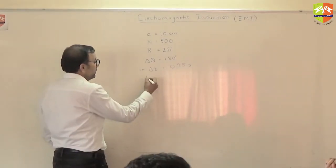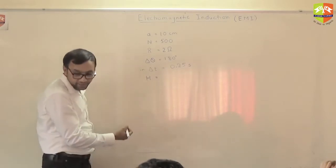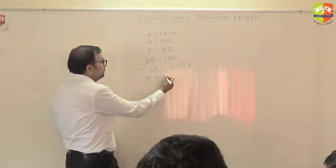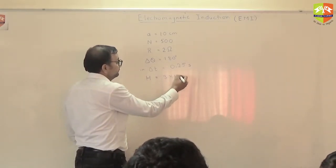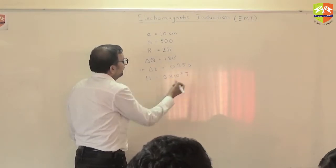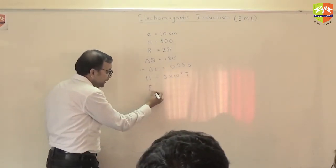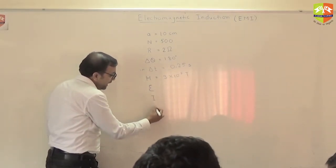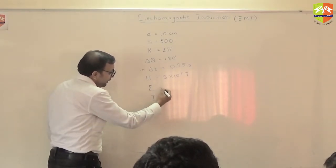It is rotated by 180 degrees in 0.25 seconds. The horizontal component of Earth's magnetic field is 3 into 10 raised to power minus 5 Tesla. You need to find the value of EMF, current, and the charge that has flown through the coil.